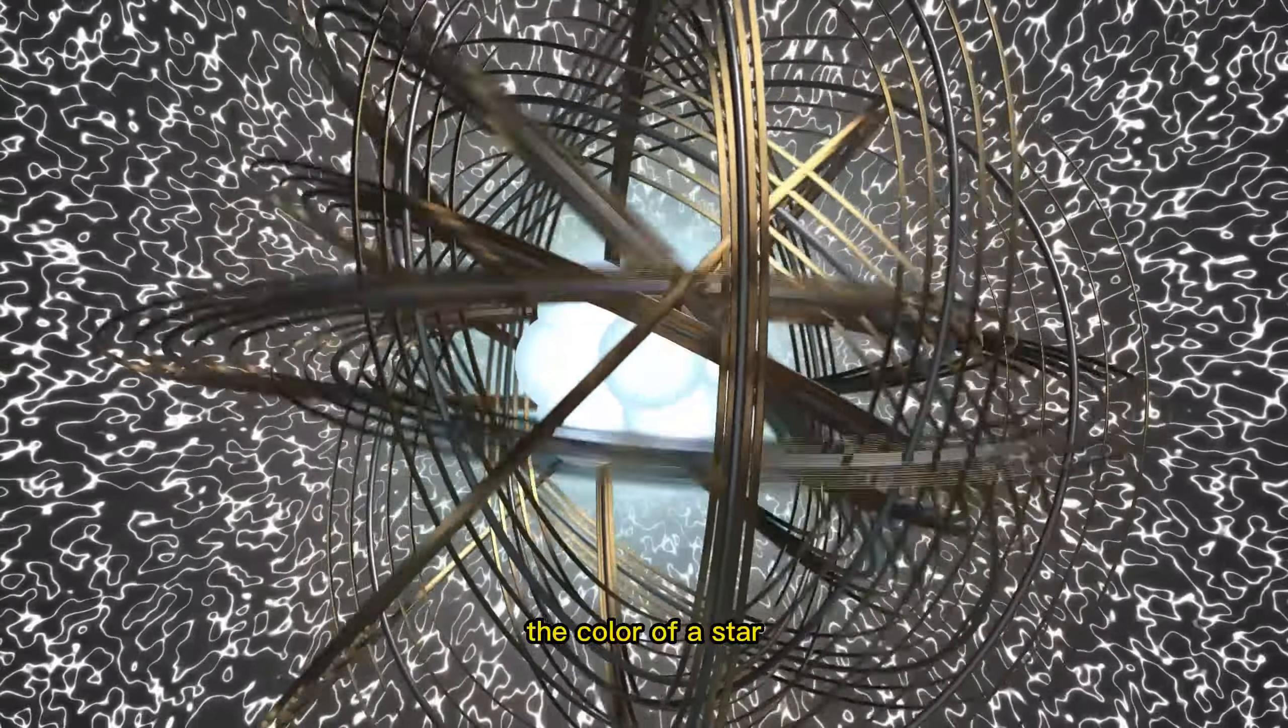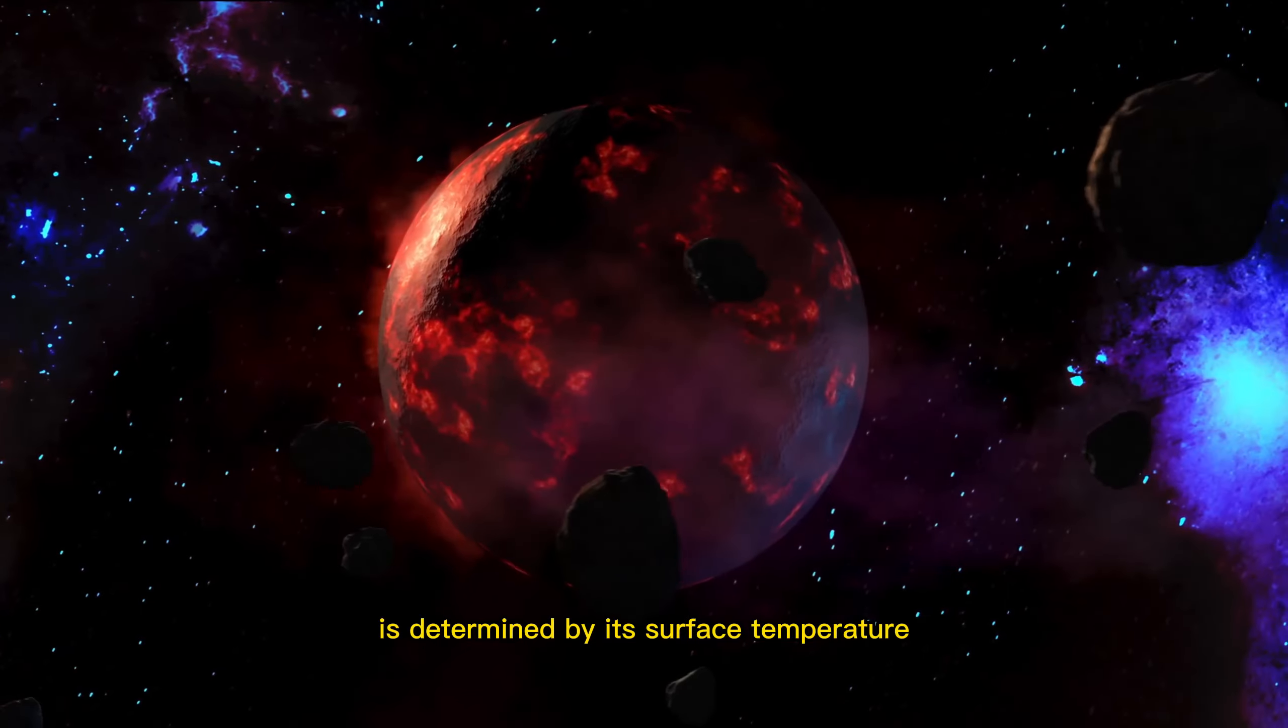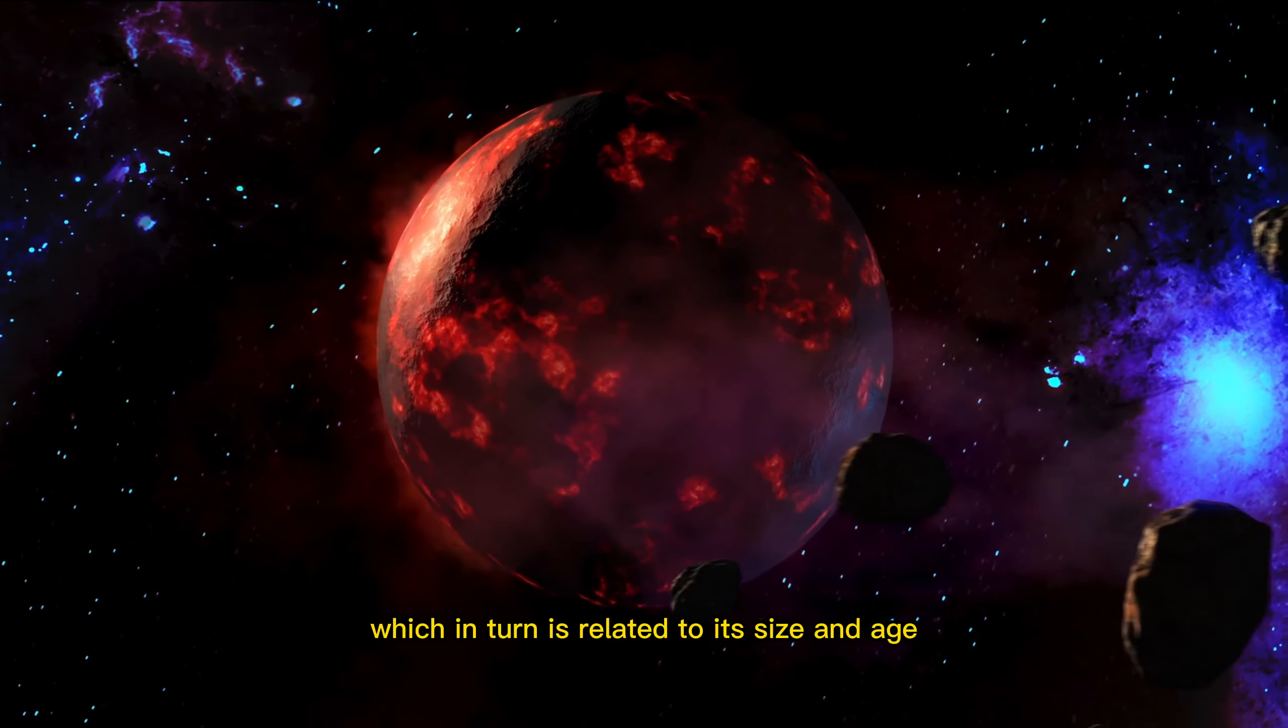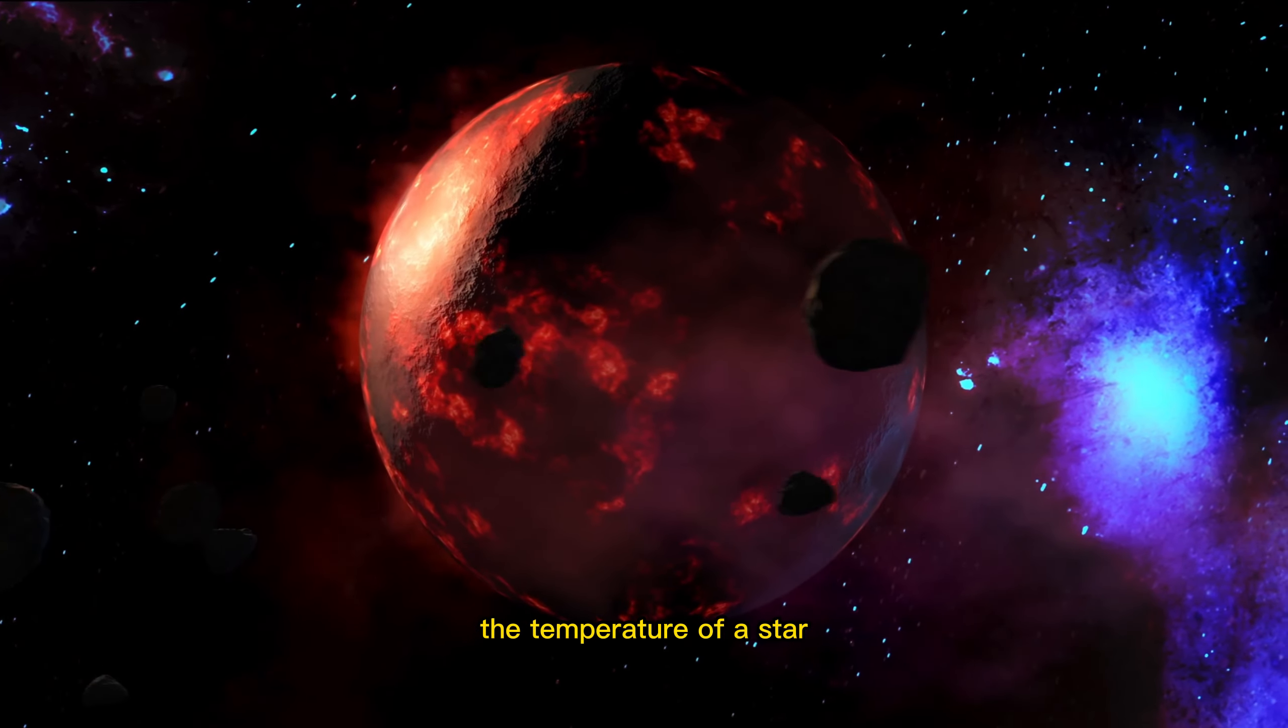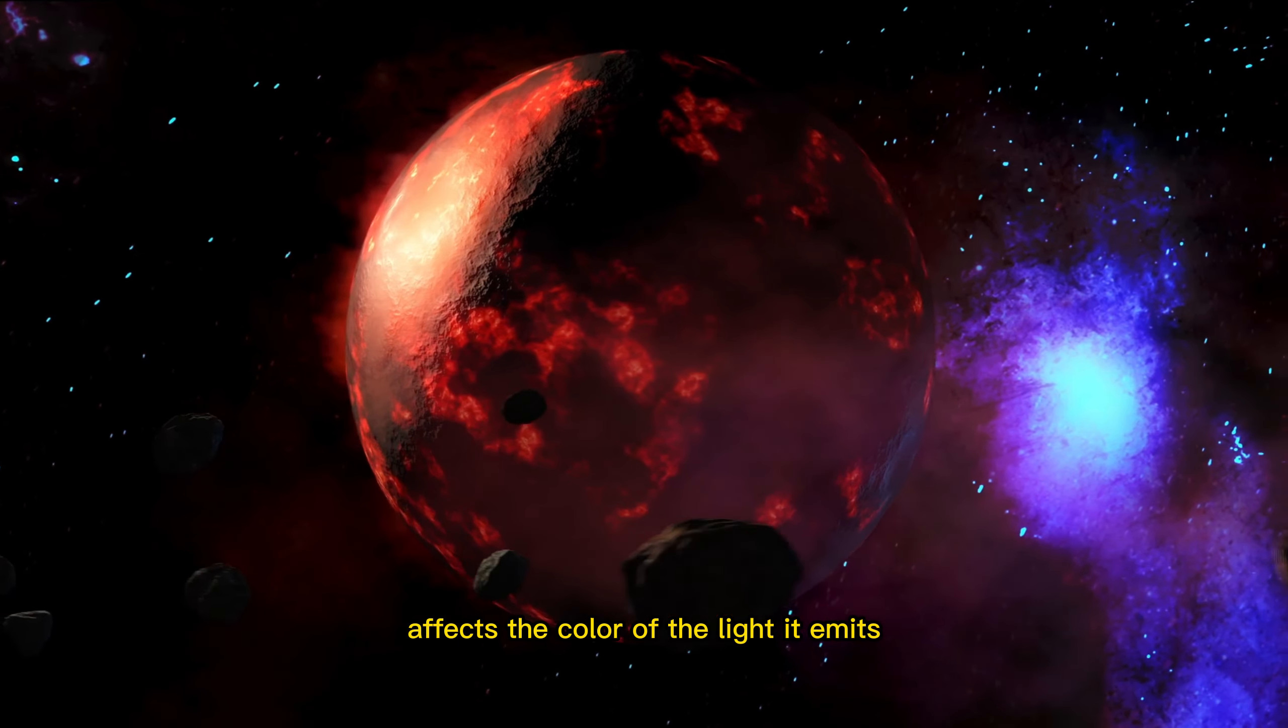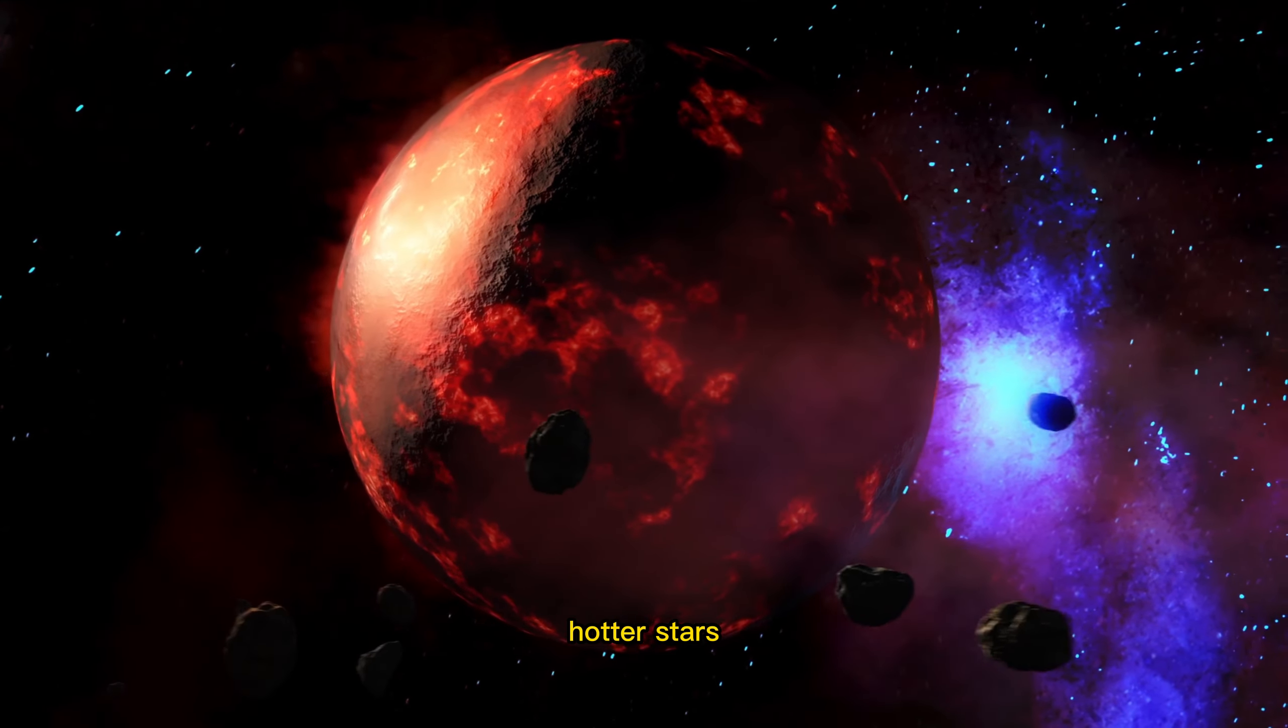through nuclear fusion. The color of a star is determined by its surface temperature, which in turn is related to its size and age. The temperature of a star affects the color of the light it emits. Hotter stars with